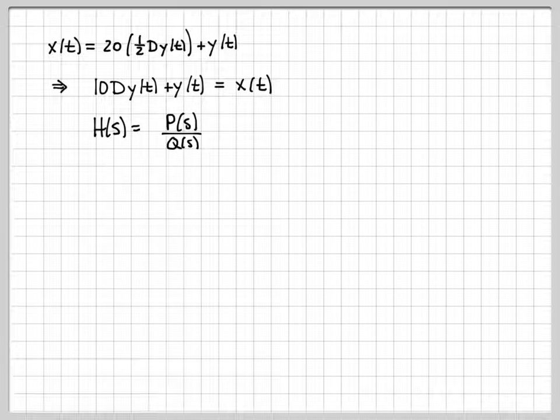And by looking at this, I can go ahead and pick off now what the P(s) and Q(s) polynomials are. Where does the P(s) come from? P(s) is on this side. There's just a 1 right there, so that's a 1.